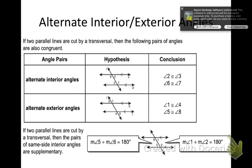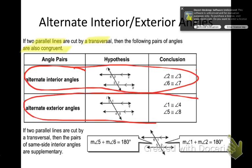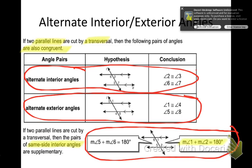Now we talked about corresponding angles; now we're going to talk about alternate interior and alternate exterior angles. Same idea: if parallel lines are cut by a transversal, alternate interior angles are congruent, and alternate exterior angles are congruent. The one that might throw you is same side interior angles — those are not congruent; they are supplementary, which means they add to 180.